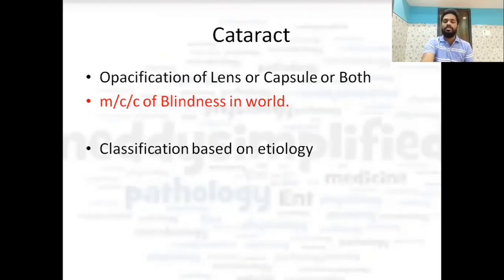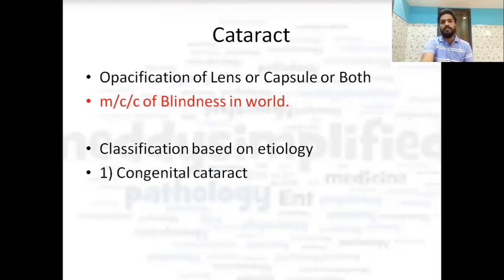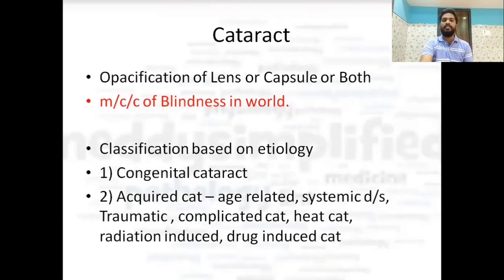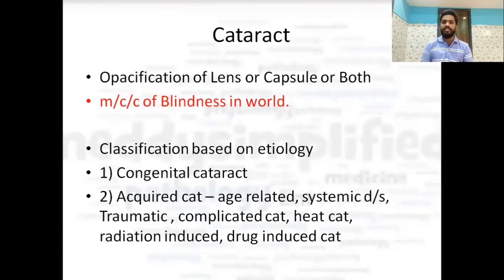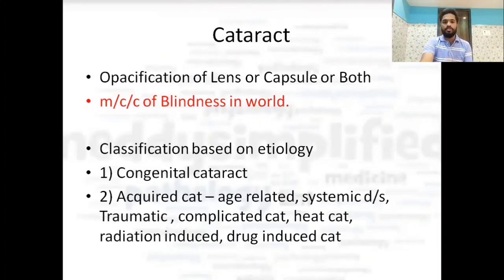Classifying cataract on the basis of etiology, it can be a congenital cataract present from birth, or an acquired cataract — acquired due to systemic disease, age-related changes, traumatic causes, complicated cataract, and so on.